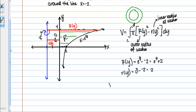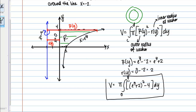Now I can plug into my integral. We need to square capital R of y, giving e to the y plus 2, quantity squared, minus little r of y squared, which is minus 4, and we integrate with respect to y. The bounds are the bounds of region R — y equals 0 to y equals 4. We're not going to work out the integral because the new part here is setting it up. If you wanted to compute it, you would FOIL the e to the y plus 2 squared, then take the antiderivative and go from there.